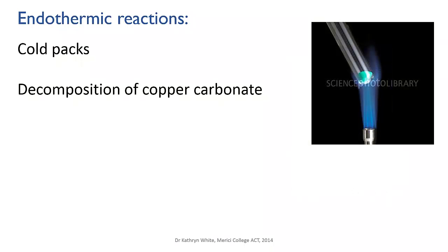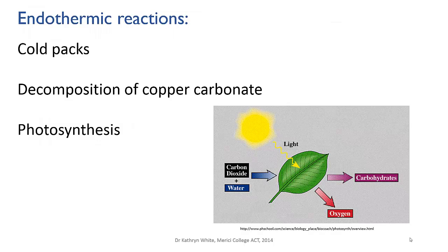Another example of endothermic reactions is the decomposition of copper carbonate — and in fact, this is the case for a lot of carbonate chemicals. When green copper carbonate powder is heated, it decomposes to give black copper oxide and carbon dioxide gas. This reaction only happens if it's heated up, and it's that heating energy that gets absorbed as the copper carbonate is transformed into the products. You may wonder why the copper carbonate has to be heated, and yet the cold pack reaction just happens as soon as the chemicals are mixed — that has to do with the activation energy of the reaction, which we'll deal with in more detail later on. Another vitally important endothermic reaction is photosynthesis, where carbon dioxide gas and water are combined to give glucose and oxygen, and this is done by plants. This is exactly the opposite reaction to respiration: whereas respiration produces energy as glucose and oxygen are turned into carbon dioxide and water, in photosynthesis energy has to be put in to turn carbon dioxide and water into glucose and oxygen, and that energy comes from the sun.